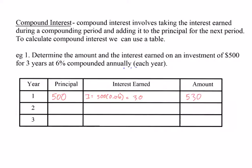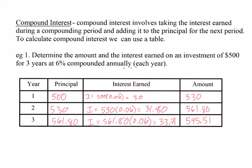Now we're going to take the $530 and move it down to the next row. Interest is again calculated by taking our principal and multiplying it by the percent it increases by. This time we got $31.80, and we get a total of $595.51 after all three years.